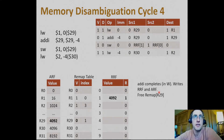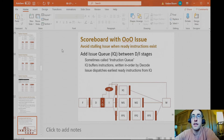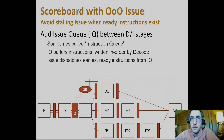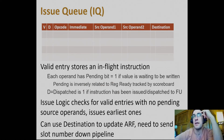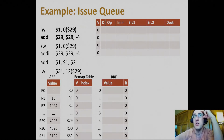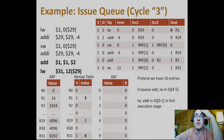I introduced the idea of the issue queue detaching the front end of the processor. We call the fetch and decode logic the processor front end. The middle is the execution core, the back end is the right back part. We walked through an example with an issue queue, with naively generated code with register renaming and an issue queue.